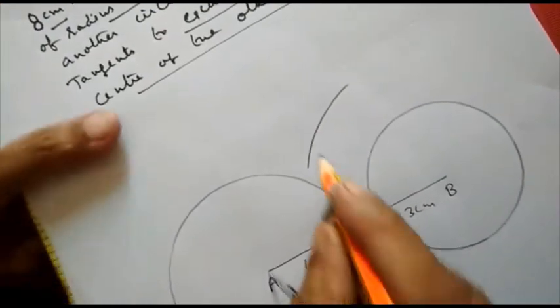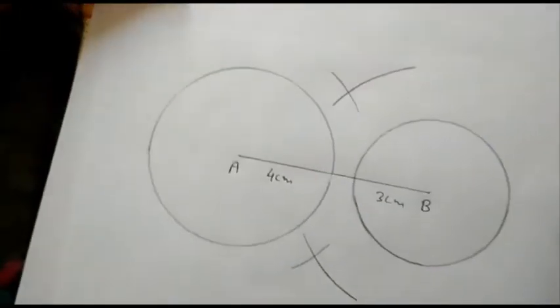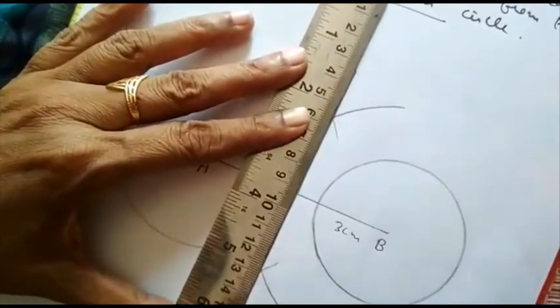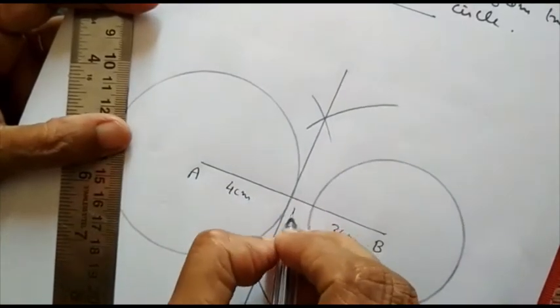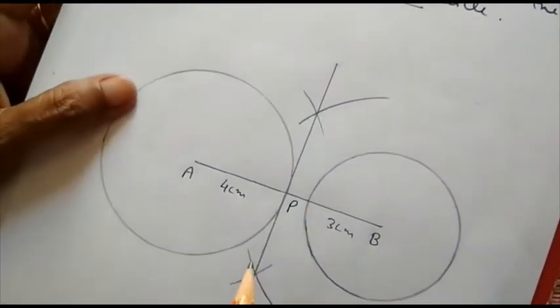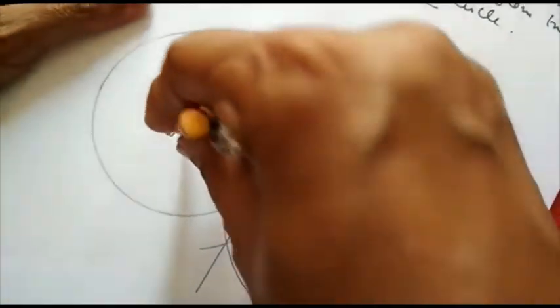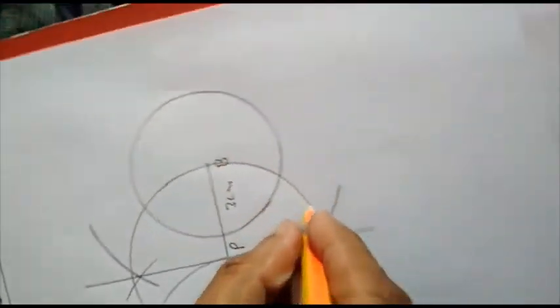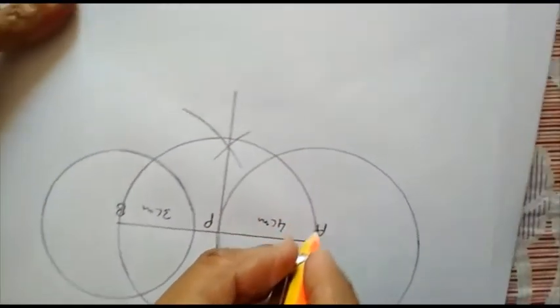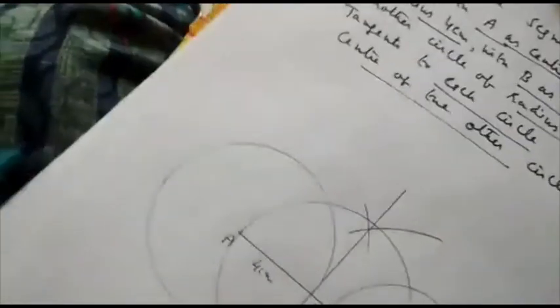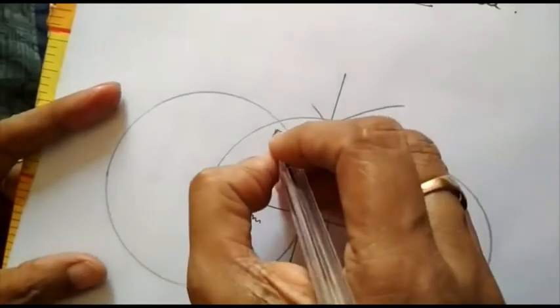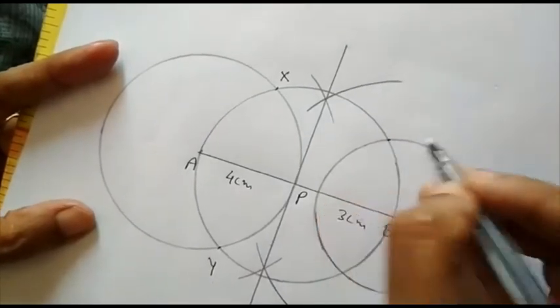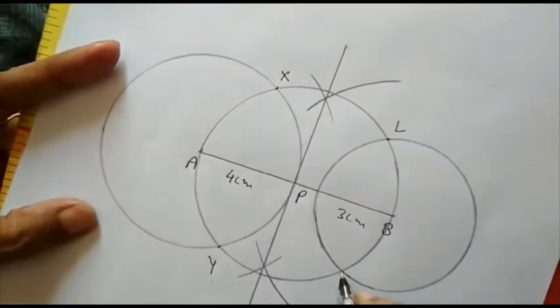Perpendicular bisector of AB will be drawn. Let P is its midpoint. Now with P as center and radius AP, we draw a circle that will pass through A and B. Now where this circle intersects the previous circles, let these are points X and Y and these are points L and M.